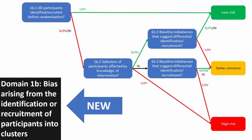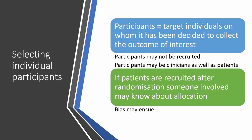Moving on to domain 1B: this new domain covers bias arising from the identification or recruitment of participants into clusters. We introduced this domain to deal with a very specific sort of bias that arises because of the difference between the way individual participants are selected in cluster randomised trials versus individually randomised trials. A key issue is that sometimes participants are not recruited at all, and in other cluster randomised trials there may be two or more different groups at which different aspects of the intervention are aimed.